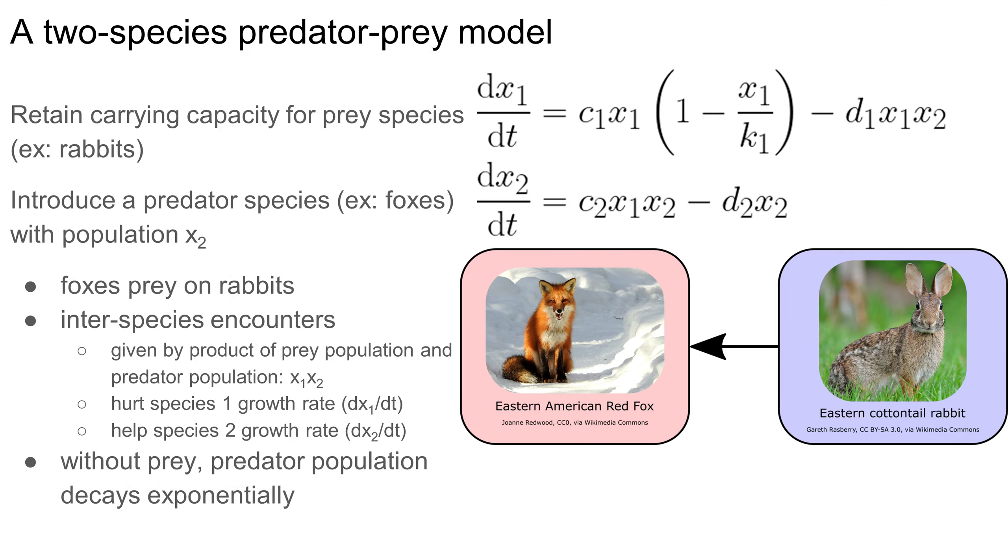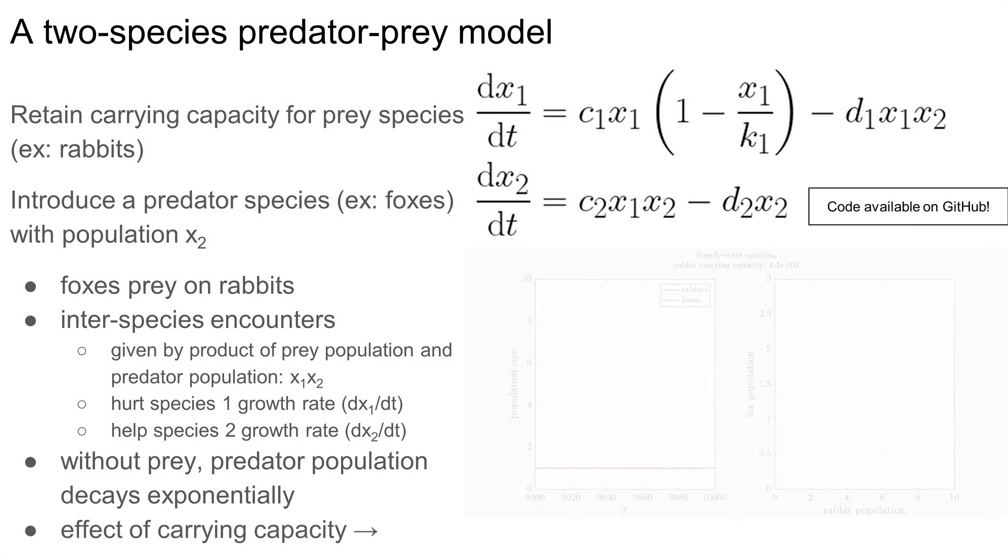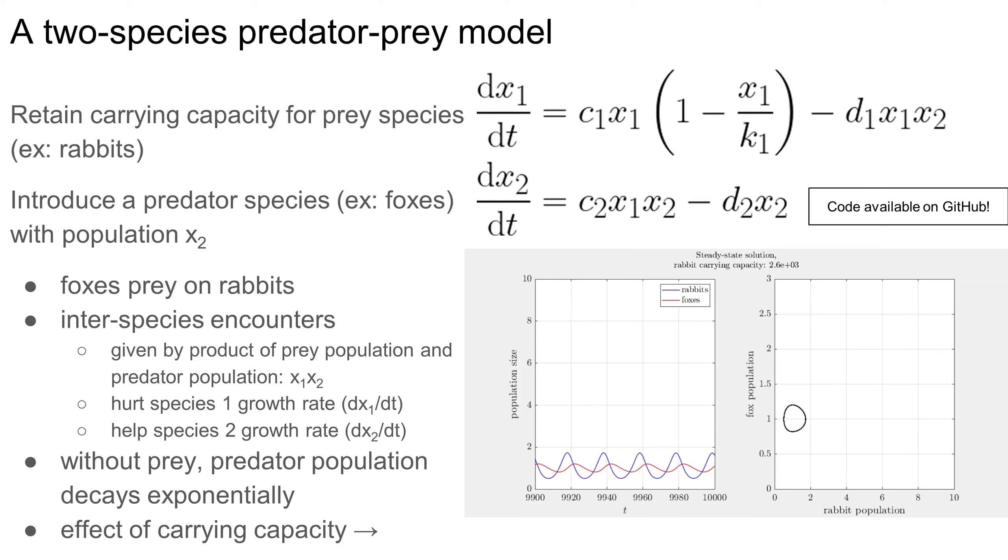Also, without rabbits to eat, the fox population will decay exponentially, either through starvation, or if you prefer to think of it differently, through migration, as the foxes migrate to an environment with more food. Now let's simulate this predator-prey model. Once again, the code for this model is available on GitHub. In this animation, I'm steadily increasing the carrying capacity, and plotting steady-state behavior of the rabbit and fox populations, long after any initial transient effects have faded away. On the left, I'm plotting both populations versus time.